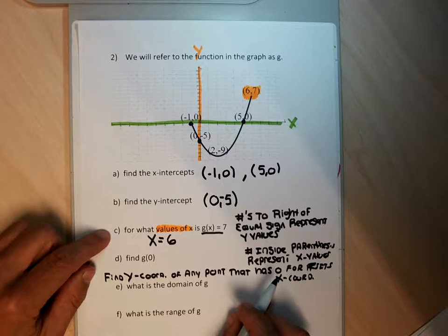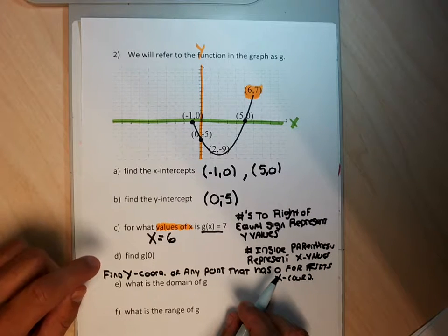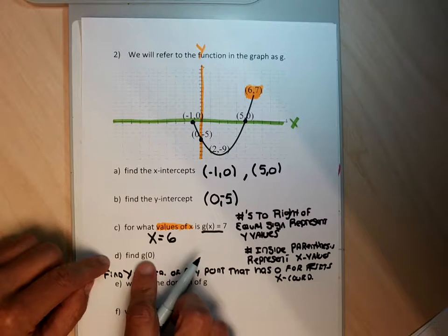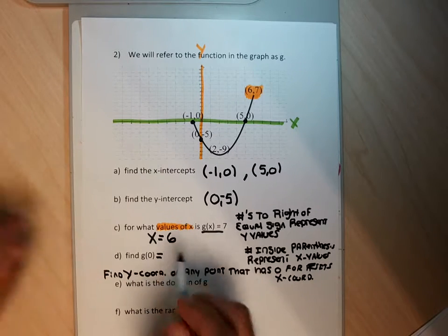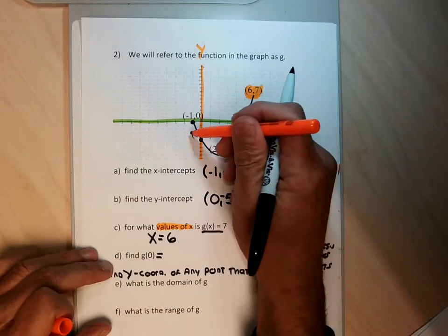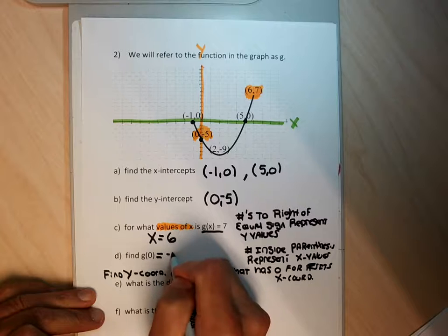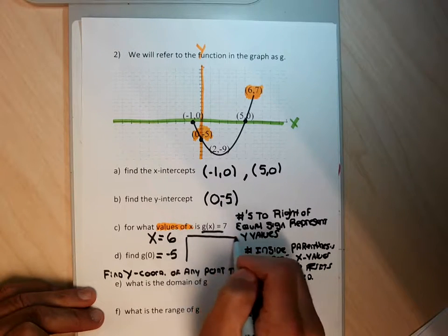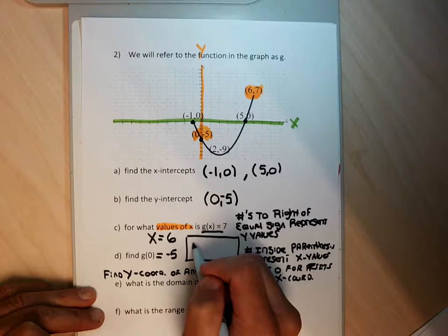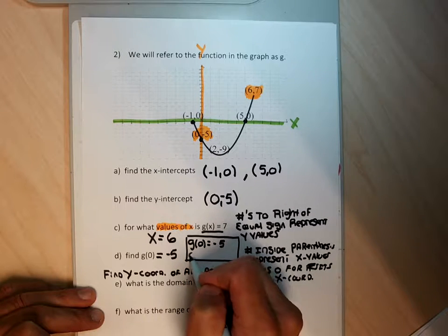Whereas if I'm asking you to find an x-coordinate given a y-coordinate, I can't ask that as slickly. But 'find G of 0' completely means find the y-coordinate of any point that has zero for its x-coordinate. This is calling out the point zero, negative five. My answer for part D — I could write G of 0 equal to negative 5, or I can write y equal to negative 5, or I could just write negative 5. Writing G of 0 equals negative 5 would probably be the nicest answer.